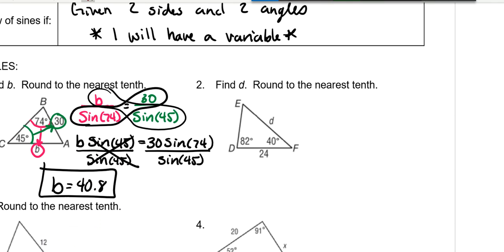On this one, our 82 goes with D, and then our 24 is across from E. And we don't know what E is, but we have to know what E is. So we're going to have 24 on top, but we need to know what E is in order to take the sine of it.